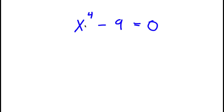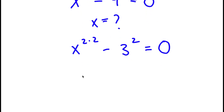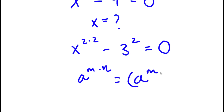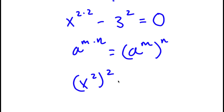So in this problem I have x to the power of 4 minus 9 is equal to 0, and I want to find the value of x. I'm going to first rewrite x to the power of 4 as x to the power of 2 times 2, and minus 9 I can rewrite as 3 to the power of 2. Now using the rule a to the power of m times n equals a to the power of m to the power of n, x to the power of 2 times 2 becomes x to the power of 2 to the power of 2, minus 3 to the power of 2 equals 0.